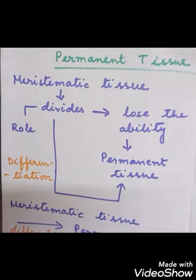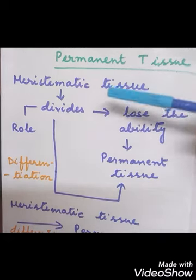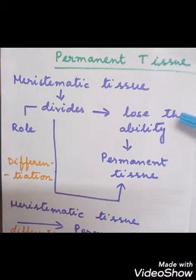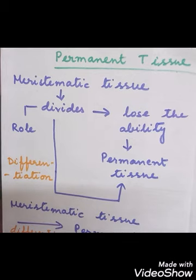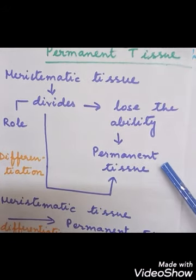Today our topic will be about permanent tissue, which has lost the capacity to divide. The cells that are formed by the meristematic tissue will take up some specific functions, and after a continuous process of division they will form permanent tissue and lose their ability to divide.